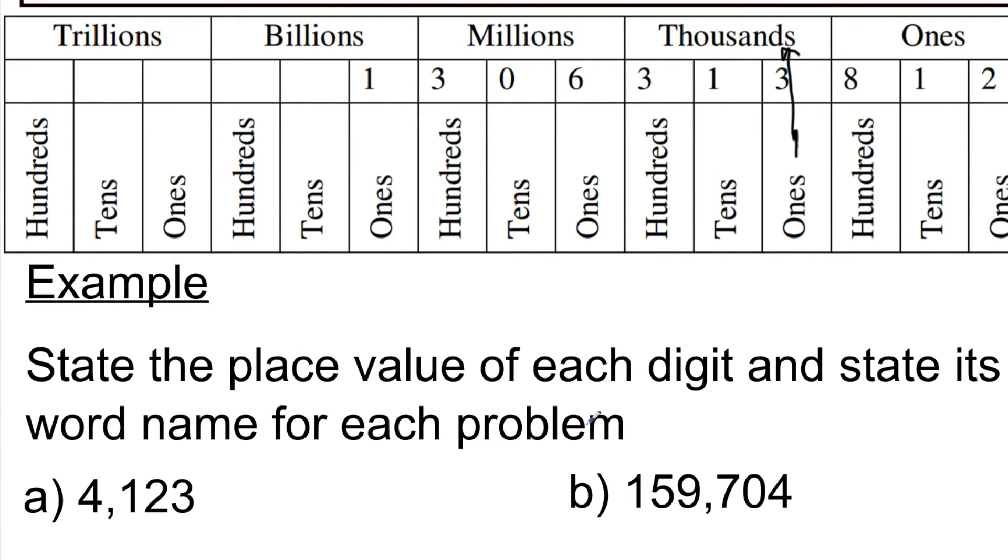So let's do this for the second one. And then we'll talk about the stating the name. So if it says state the place value of each digit, well, this one is six places from the beginning. So if I were to do that, I'd say here's a group of three. The digit one is in the hundred thousands place. The digit five is in the ten thousands place. The nine is in the regular thousands place. The seven is in the hundreds place. The zero is in the tens place. And the four is in the ones place.